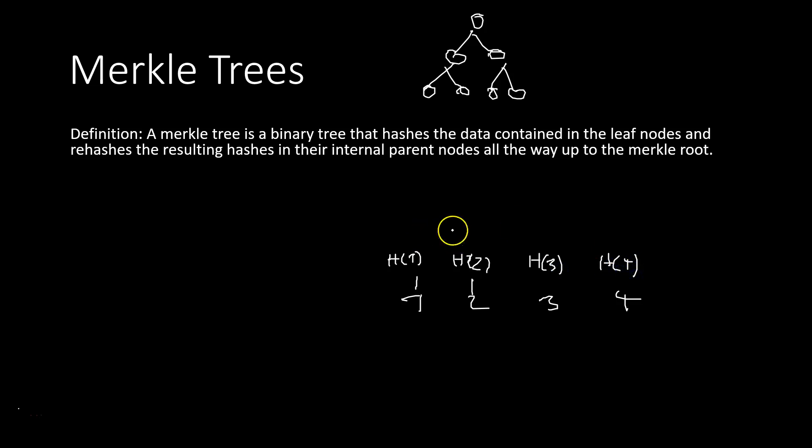Then, we're going to combine those hashes, work up in our tree, and then we take the hash again. So we take the hash of the hash of one concatenate it with the hash of two. Same over here.